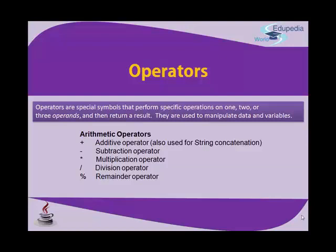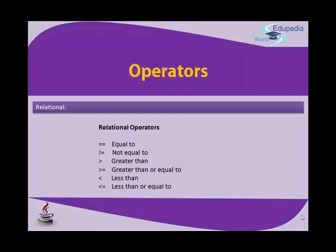Next are relational operators, which are very important when writing programs. You use them with conditional statements when you want to test conditions and control the program flow. If you forget any of these, programming becomes very difficult, so you must learn and remember these symbols to avoid problems while controlling the program.